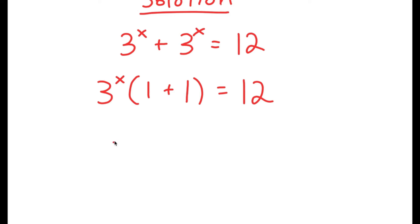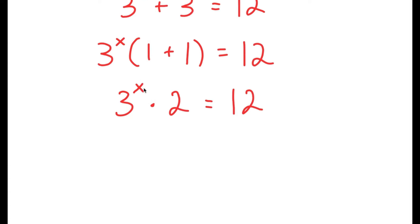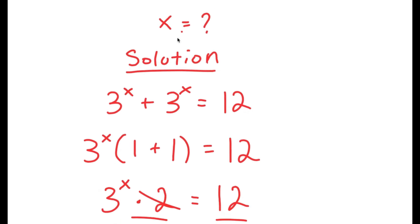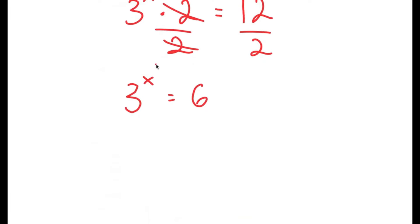Now, 1 plus 1 is 2, so I get 3 to the power of x times 2 is equal to 12. From here we want to isolate x, and to do that we divide both sides by 2. These two cancel out, and I'm left with 3 to the power of x equals 12 divided by 2, which is 6. So now I have the simpler equation 3 to the power of x equals 6.